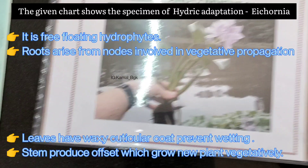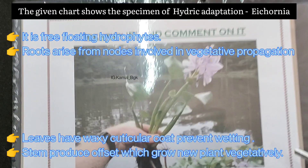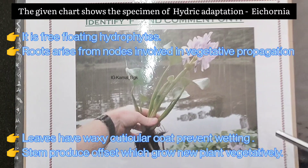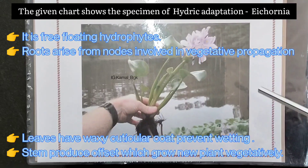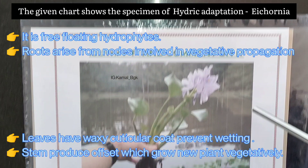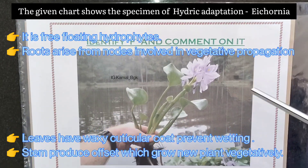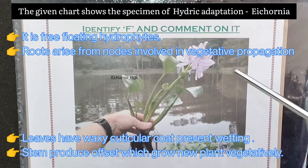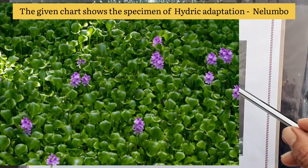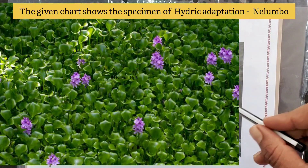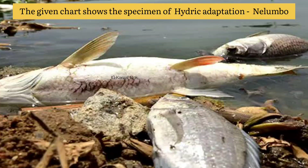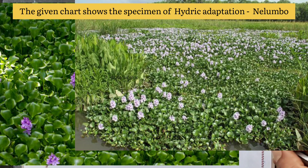The given chart shows the specimen of hydric adaptation, i.e., Eichhornia. It is a free-floating hydrophyte. Roots arise from nodes involved in vegetative propagation. Leaves have a waxy cuticular coat which prevents wetting, and stem produces offsets which grow new plants vegetatively. The Eichhornia plant is also called the terror of Bengal because of its vigorous growth on the water surface, draining oxygen from water, leading to fish mortality and death of other aquatic organisms. Because of its vegetative propagation, it grows rapidly.